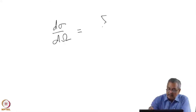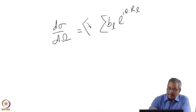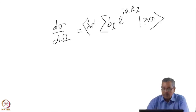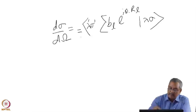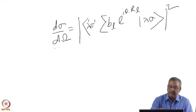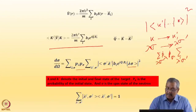So d-sigma by d-omega will be given by a squaring of b_L times e to the power i q dot R_L — this is the summation — but I also have to account for k minus k-prime. It is going from some initial state, where lambda includes energy, spin, and everything, to a final state that also includes energy, spin, and everything. Squaring this gives me d-sigma by d-omega as the square of the scattering amplitude.